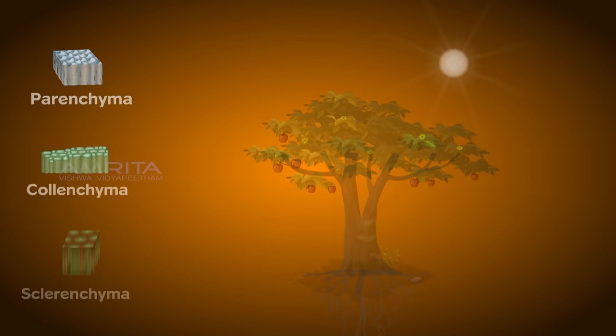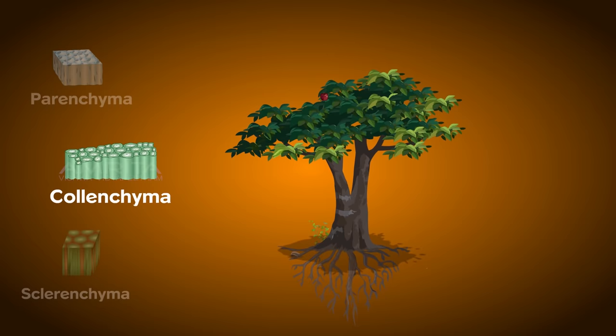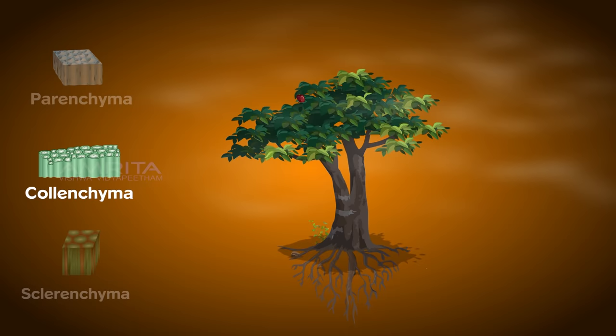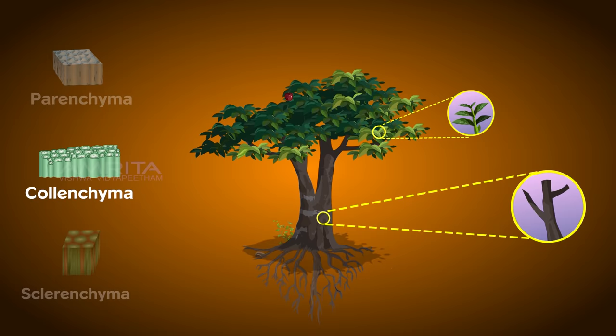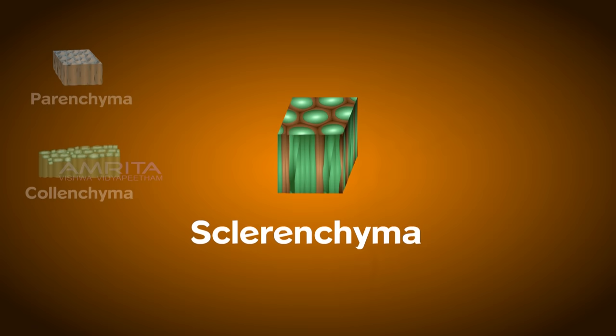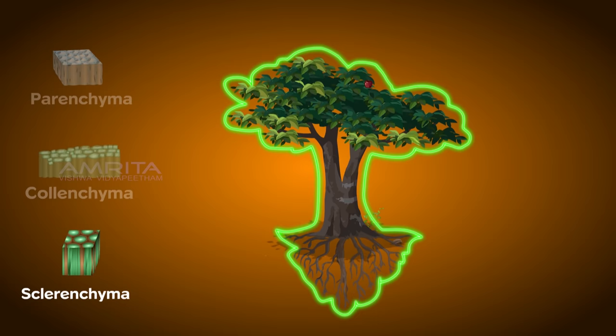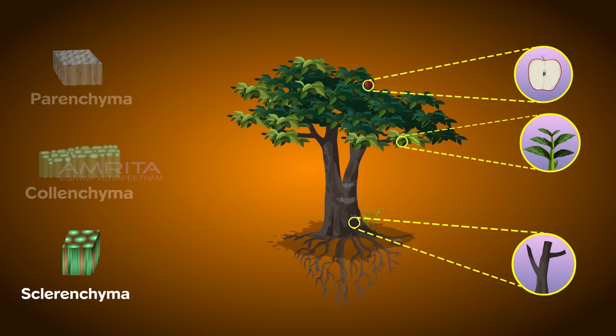The colenchyma tissues are composed of living, elongated cells. They provide elasticity, mechanical support and tensile strength to the plant body, and are found mainly in the cortex of stems and leaves. The sclerenchyma tissues are dead cells having extremely thick cell walls containing lignin. They protect the plants and this tissue is present in stems, leaves and in the hard covering of seeds and nuts.